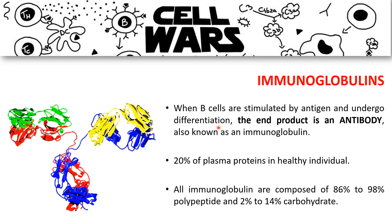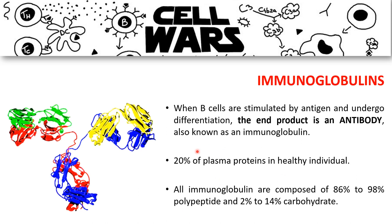This differentiation refers to B cells becoming plasma cells, and the end product of this stimulation is the production of an antibody, also called an immunoglobulin. This accounts for about 20 percent of the plasma proteins in a healthy individual. Immunoglobulins are mostly glycoproteins and they are found in the serum portion of the blood.